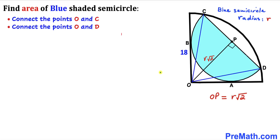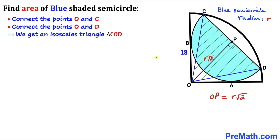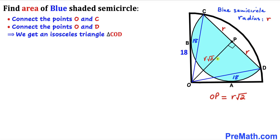In the next step, I connected center O with points C and D, giving us isosceles triangle COD. OC and OD are radii of the quarter circle, so OC = 18 and OD = 18. CP and PD are each the radius r of the blue semicircle. Since CP = PD, OP is the median of CD, and therefore this angle is 90 degrees.